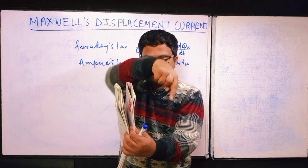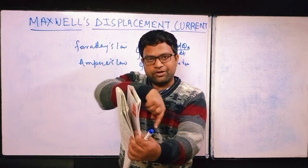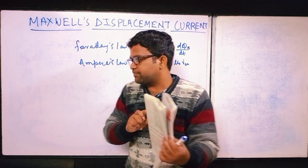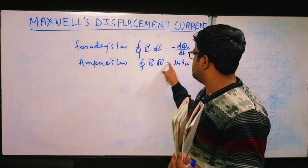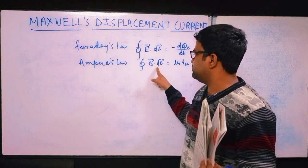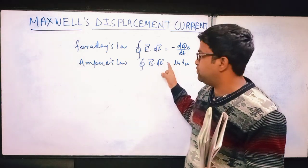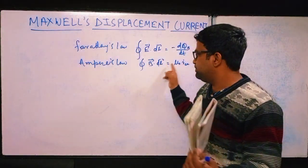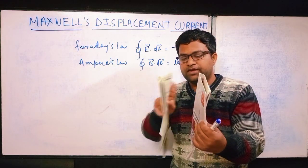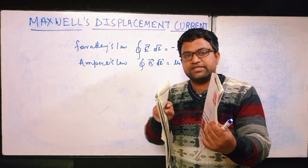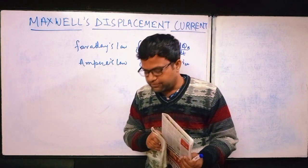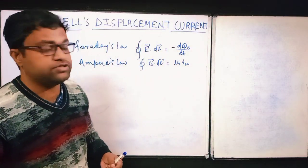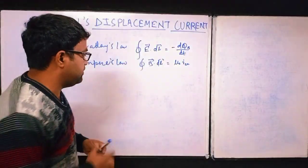Outside the capacitor, where the current is present, there will be a magnetic field due to the current. But in between the plates there is no current, so the enclosed current is zero — it should give zero magnetic field from Ampere's law. So Ampere's law is failing here. Maxwell argued that Ampere's law fails here: there is a varying electric field between the plates, yet we are still getting a magnetic field.